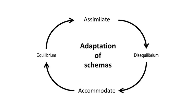The process of adaptation, assimilation, disequilibrium, accommodation, and returning to equilibrium is a continuous cycle. Think about it like solving a puzzle: every new piece either fits — assimilation — or makes you reconsider your approach — disequilibrium — until finally the picture becomes clear — equilibrium. This cycling process is something you'll witness often as a teacher.